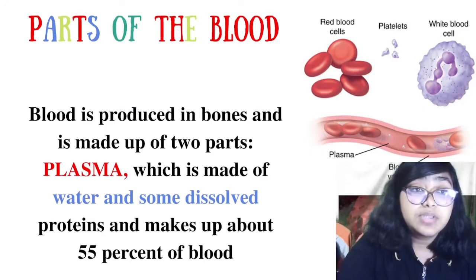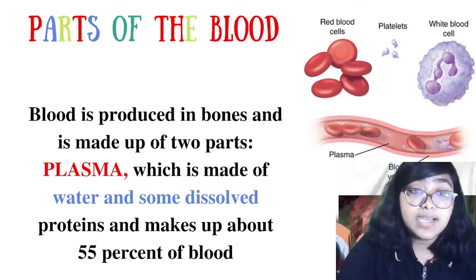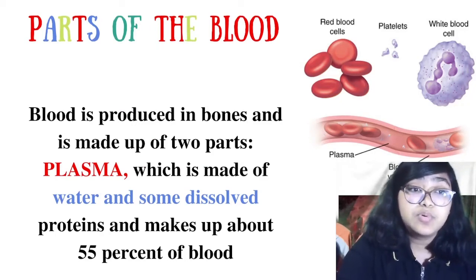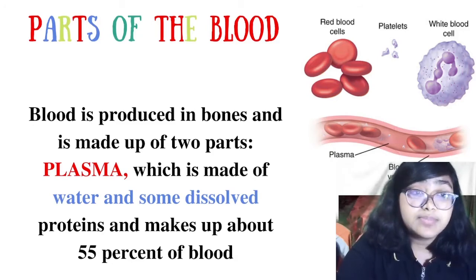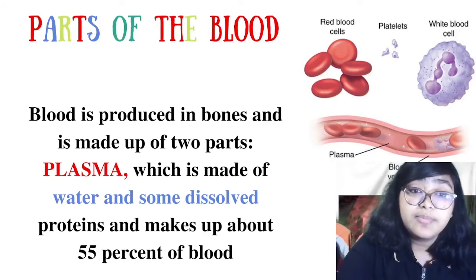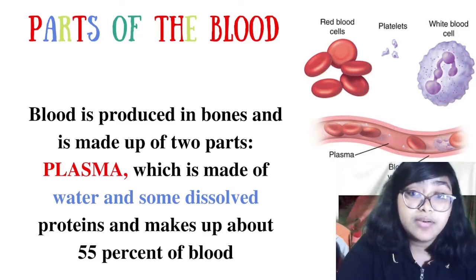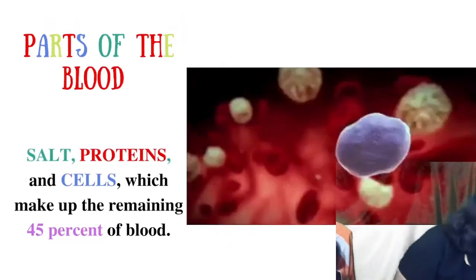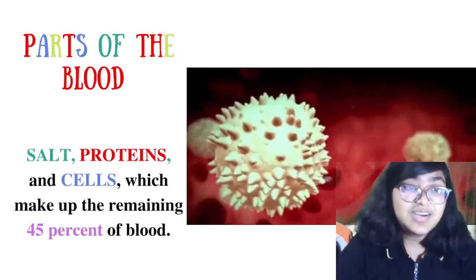Now we're going to talk about the parts of blood. There are various components: red blood cells, platelets, white blood cells. Blood is produced in the bones and has two main parts: plasma, which is made up of water and some dissolved proteins and makes up about 55 percent of blood.